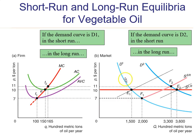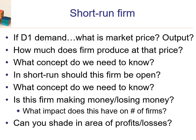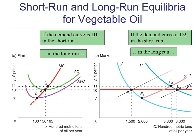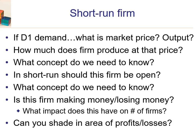With demand D1 and the short-run supply curve, the market price is $7 and the market output is 2,000. How much is the firm going to produce at that price? The price is $7, and a firm wants to produce where MR equals MC, so this profit-maximizing firm produces 100 units. This is the firm side; this is the market side.